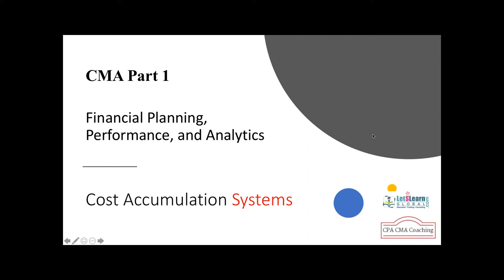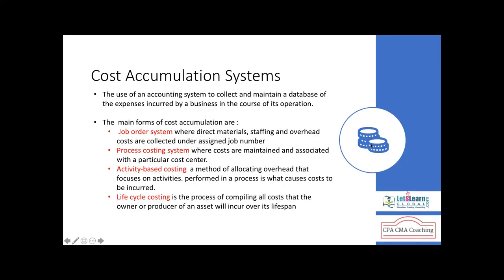Different companies use different costing methods based on the nature of their business operations. The accumulation systems we cover include job order costing, process costing, activity-based costing, and life cycle costing — summarized by the acronym JEPAL.